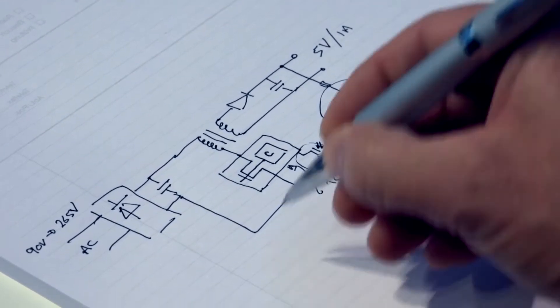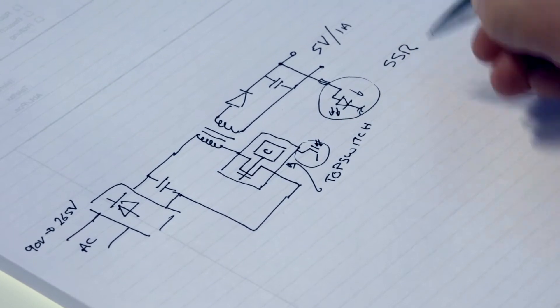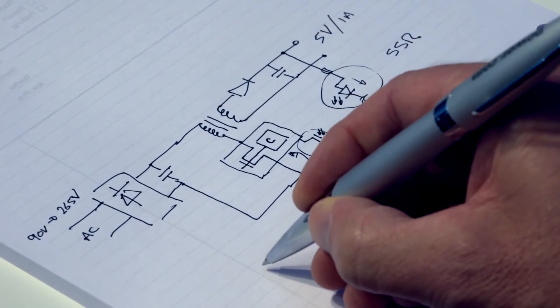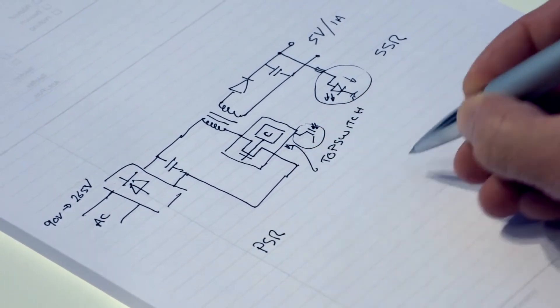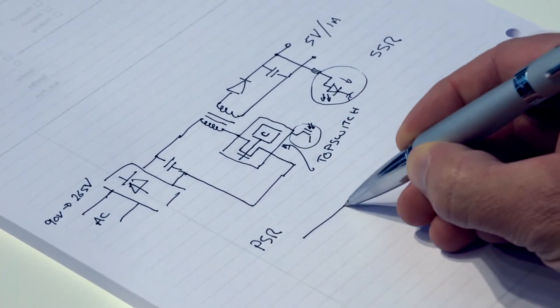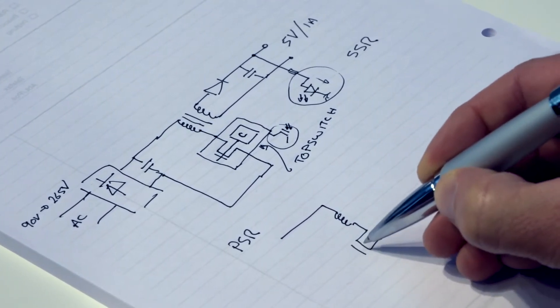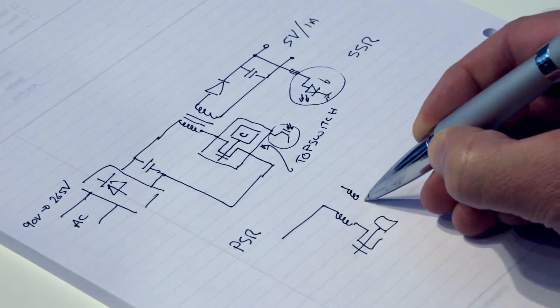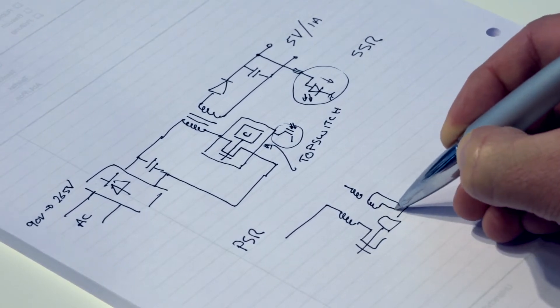The second way to do it is called secondary side regulation. There's a technique that came into vogue about eight years ago, nine years ago called primary side regulation and in a primary side regulator you make a more complicated transformer and you put an extra winding on the transformer that is coupled into the control element.